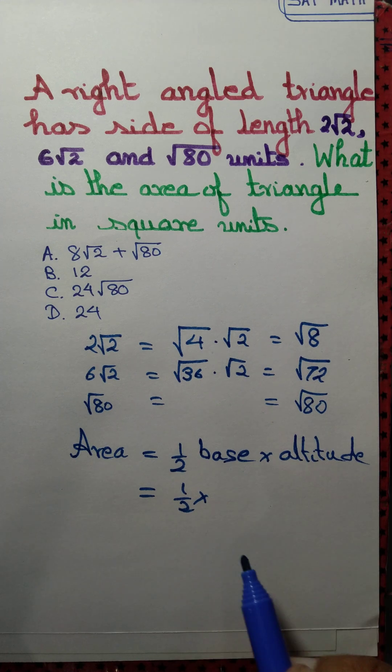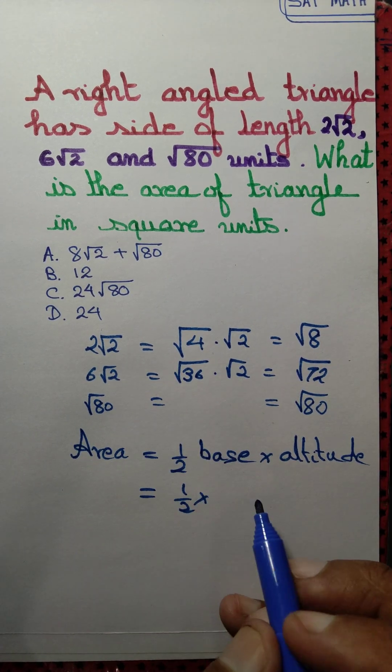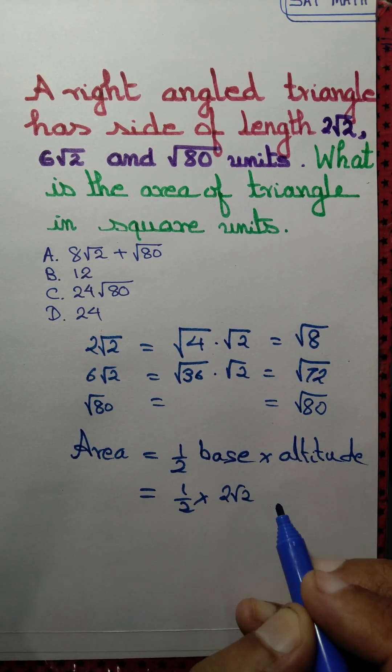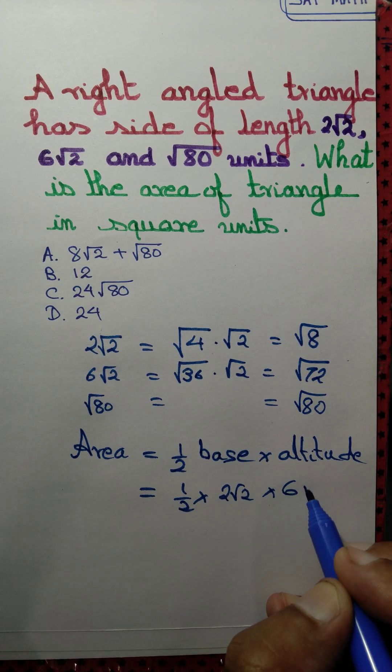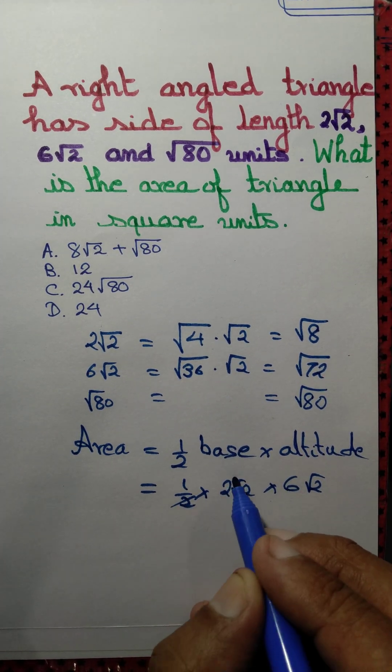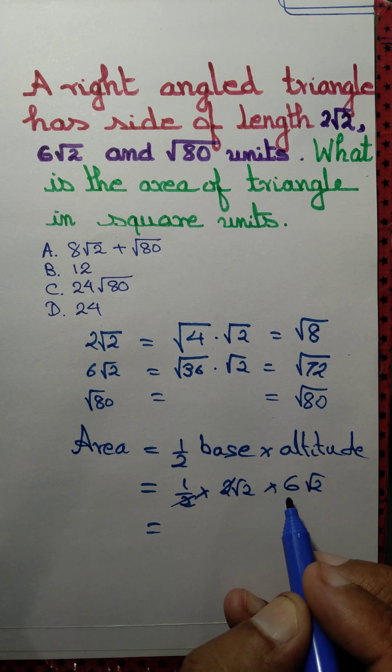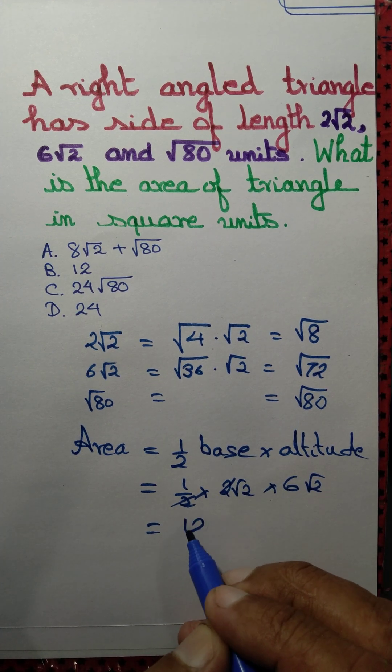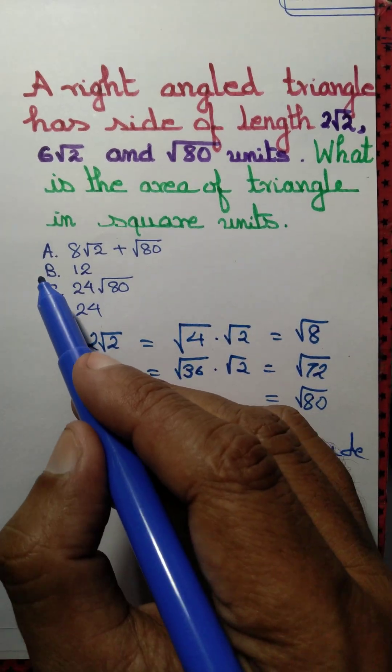That's equal to half—base we can take it as 2√2, altitude we can take it as 6√2. We cancel 2 out and we get 12 square units. So the correct option is option B.